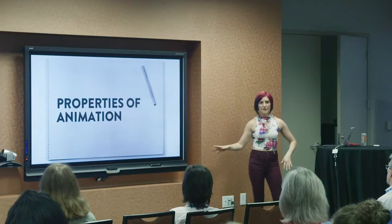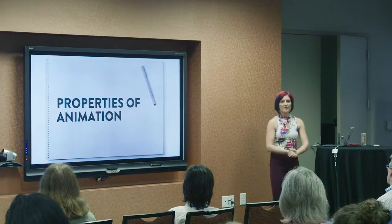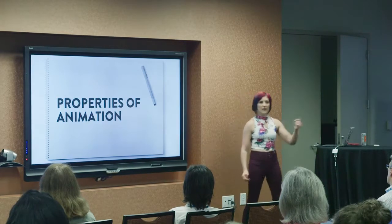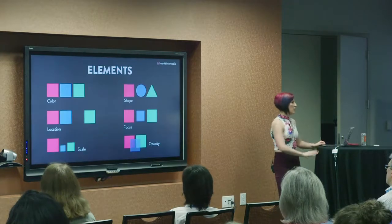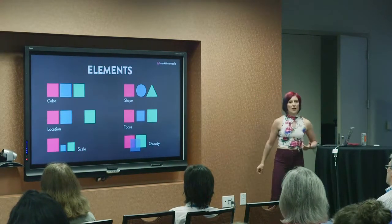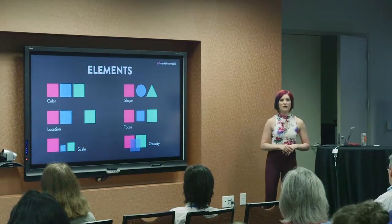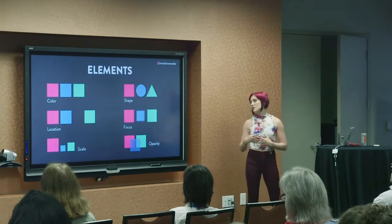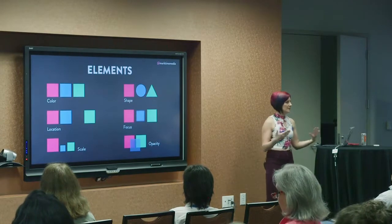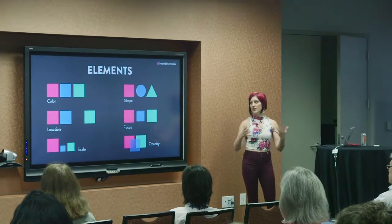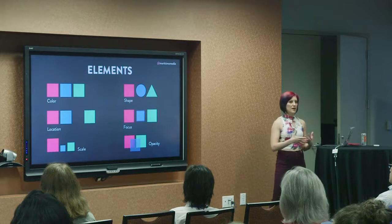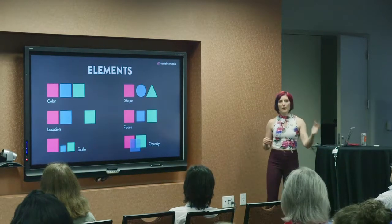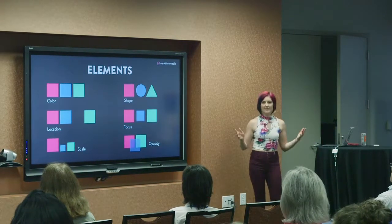Now I'm done with the philosophy parts, so we're going into practical stuff: what are the properties we can animate, and in what way can we animate them? This is an animation vocabulary lesson. What are the different elements we can animate? One is color — you can animate the fill or the border of an object. You can animate the location of an object — where it is relative to everything else. You can animate the scale — whether it gets bigger or smaller. You can animate the shape — you can change the shape of something into something else. You can animate the focus and you can animate the opacity — making it more opaque or more transparent.